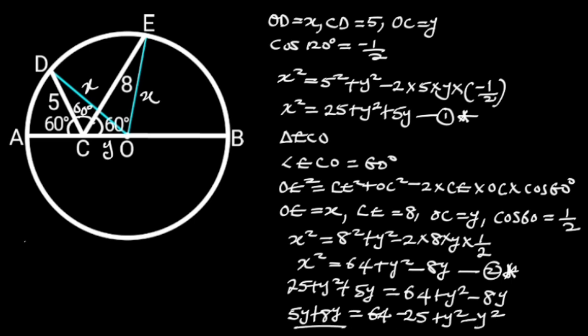5Y plus 8Y is equal to 13Y. 64 minus 25 is equal to 39. And Y squared minus Y squared is equal to 0.